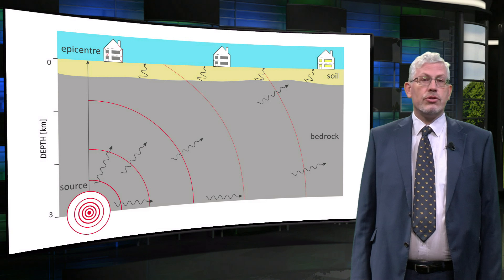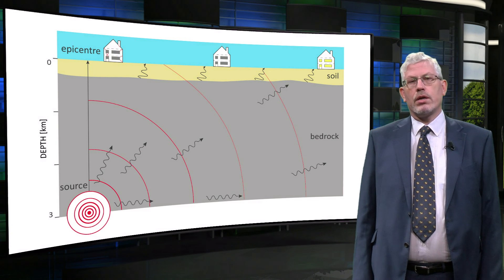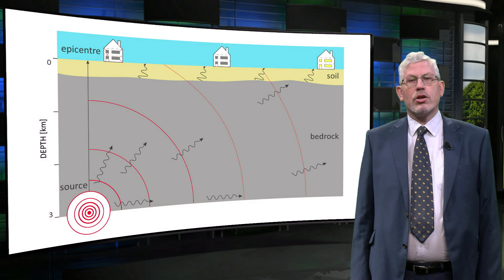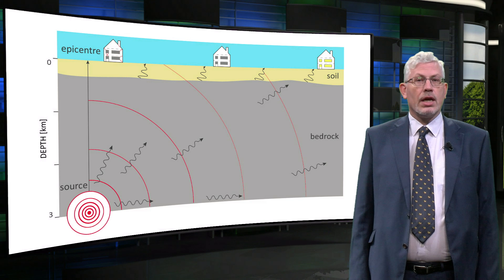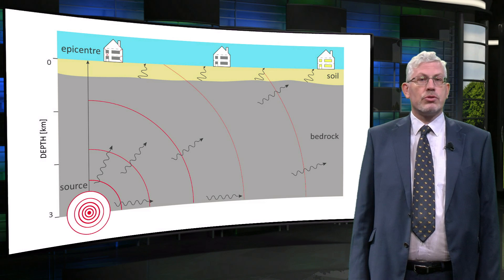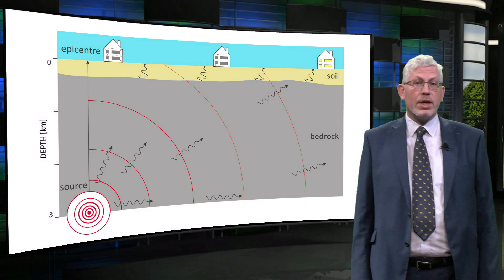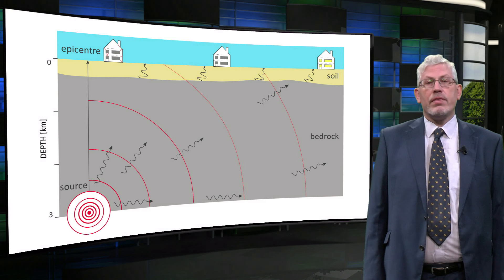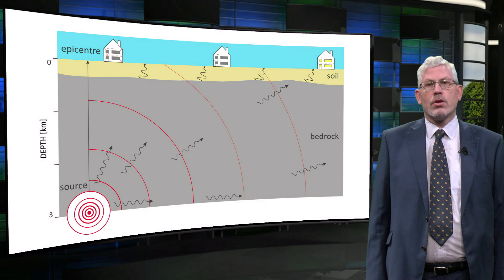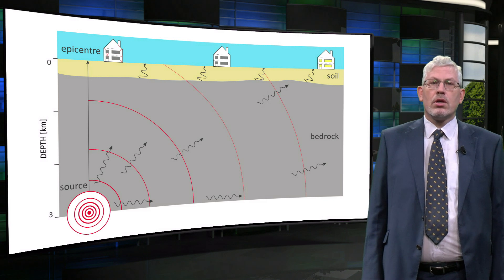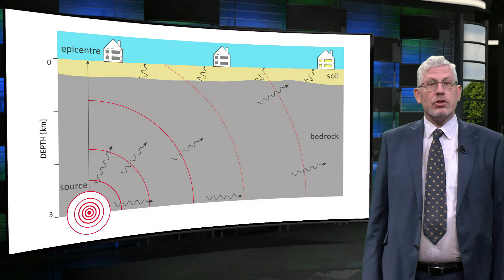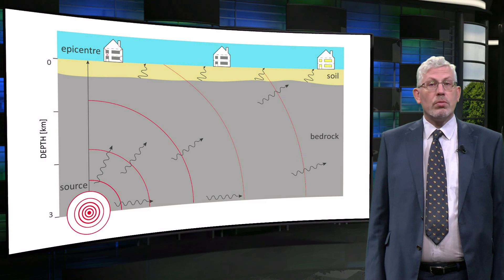Intensity and magnitude measure different characteristics of an earthquake. When an earthquake occurs, waves radiate from the source to the ground surface. Intensity measures the consequence of the shaking produced by the earthquake at a certain location and is determined from the effects on people, structures and the natural environment. For example, feeling the ground shaking, ornaments falling over, buildings cracking or the electricity not working. Normally the further away from the epicentre, the lower the intensity.